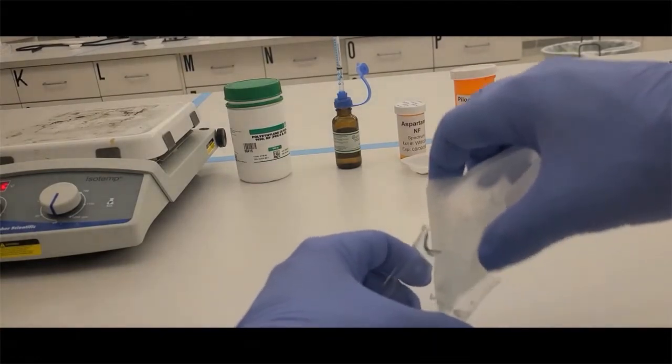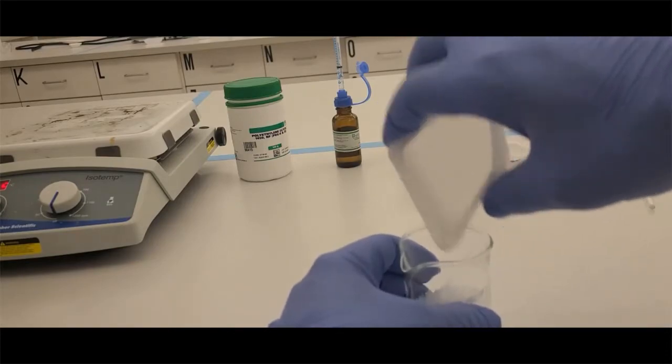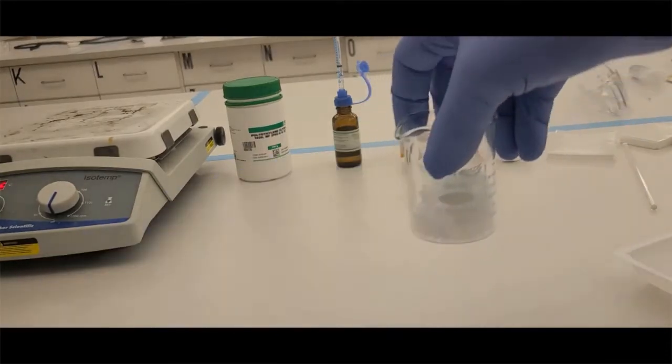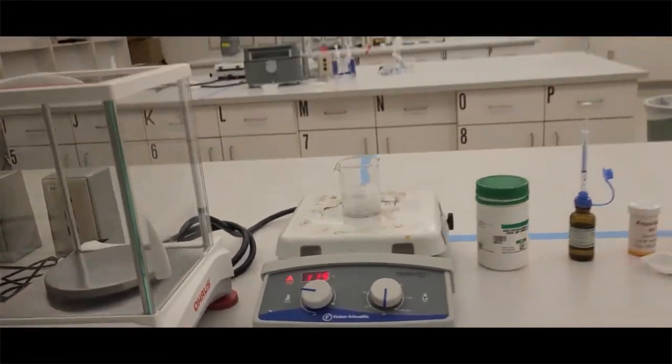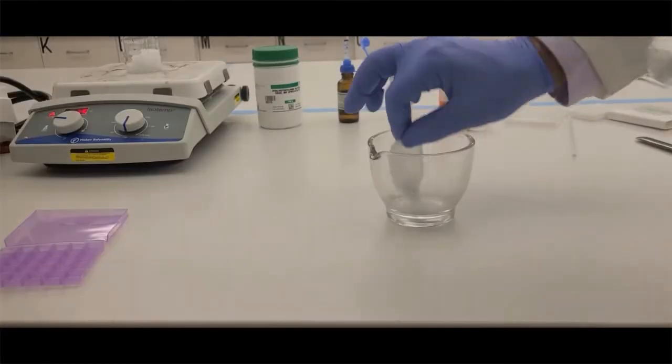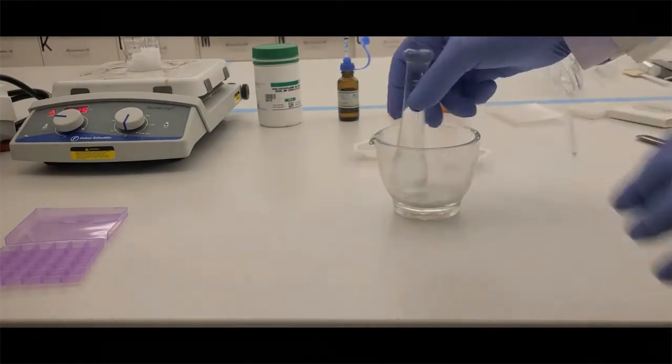So to get started, we're going to do the thing that takes the longest first. That's melting the peg base. So you can either weigh it directly in a beaker, or in my case, I'm just transferring it to a beaker. The calculated amount of peg base, we're going to put it directly in the center of the hot plate. Again, the temperature of the hot plate that you see is not calibrated. Using a thermometer is the most appropriate method.